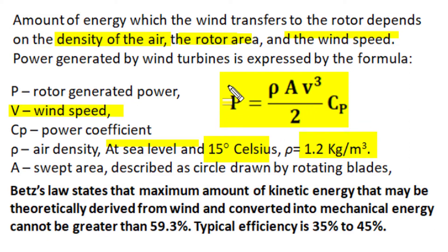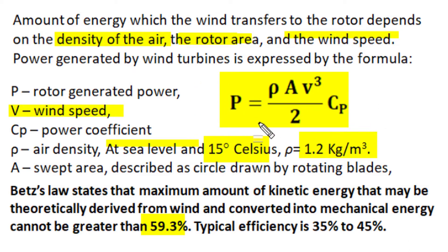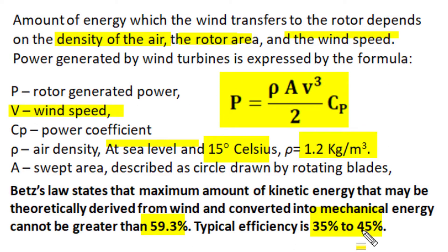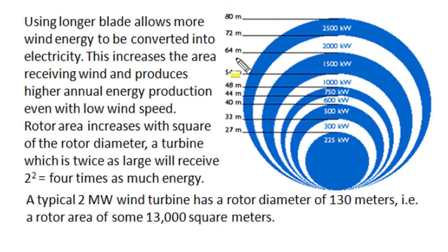The Betz limit states that at best we can convert 59% of total kinetic energy possessed by wind into mechanical rotational energy by the most energy-efficient wind turbine. In practice, typical wind turbine efficiency remains between 35% to 45%, meaning we can convert the total kinetic energy of wind velocity in the rotor blade sweep area only to the extent of 35% to 45%.